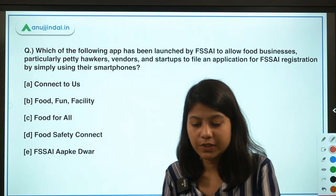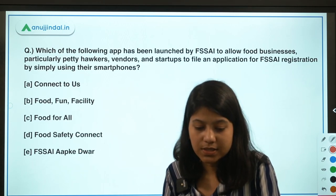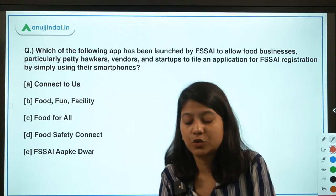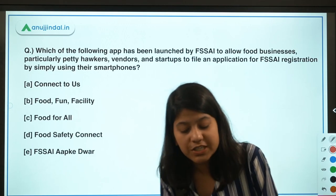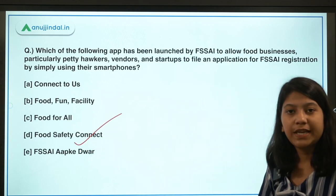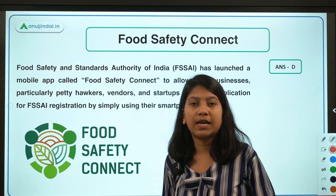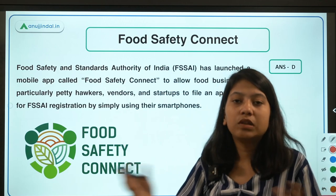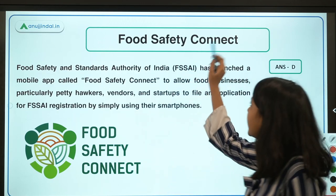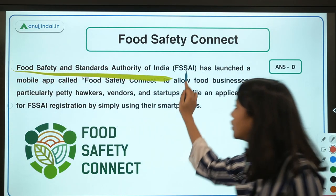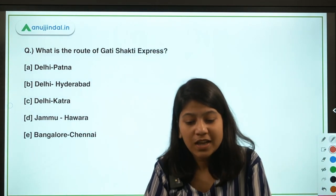Which app has been launched by FSSAI to allow food businesses — particularly petty hawkers, vendors, and startups — to file an application for FSSAI registration using just their smartphone? The answer is Food Safety Connect. The basic purpose is to allow small street vendors and petty hawkers to register themselves within the framework of FSSAI, the Food Safety and Standards Authority of India.